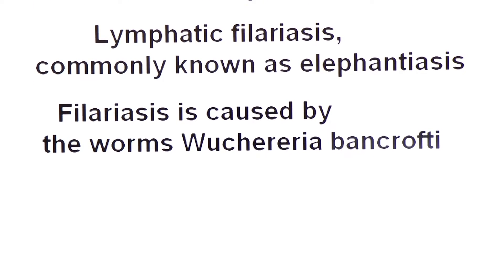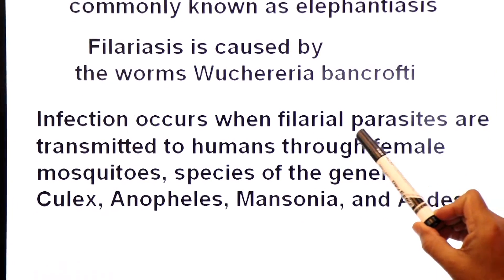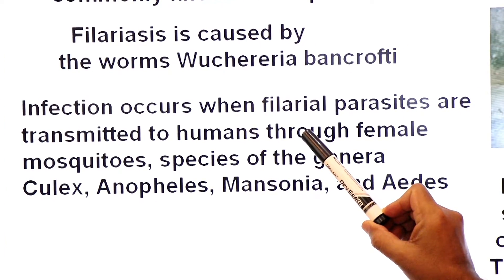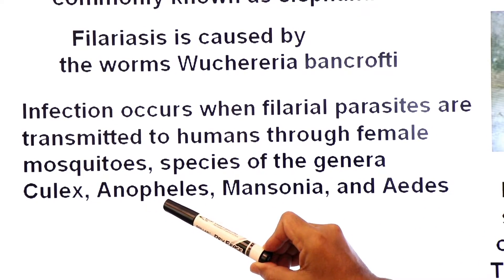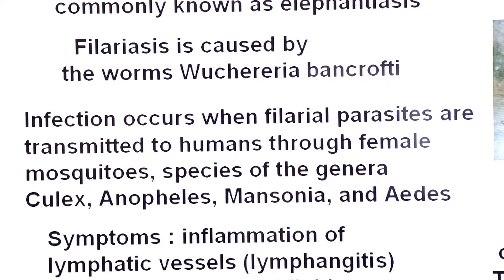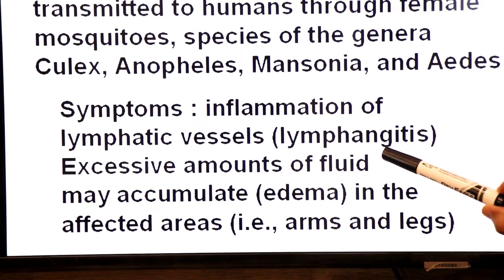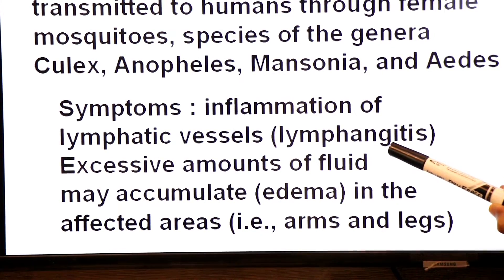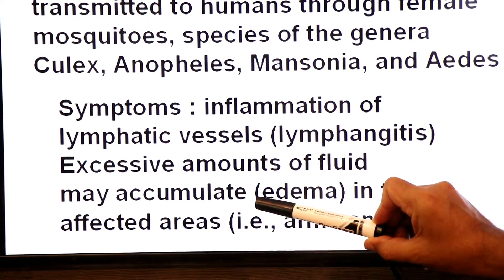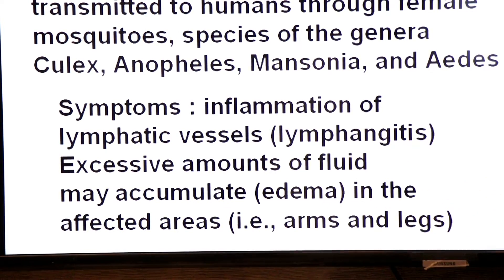Symptoms of elephantiasis include inflammation of lymphatic vessels — this condition is called lymphangitis — and excessive accumulation of fluid (lymph), known as edema, in the affected areas, especially in the arms and legs.